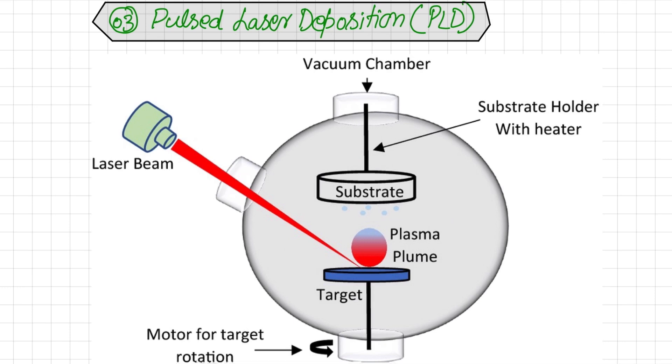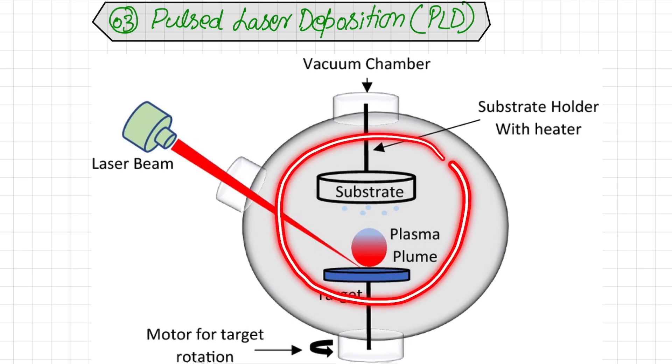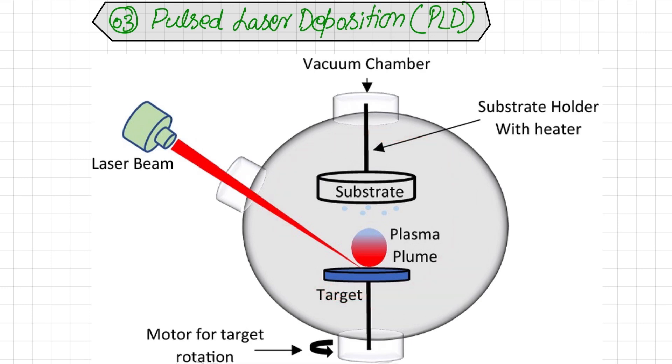So this is the basic diagram. We have mounted this target on some motor in order to get rotation of this target so that we can get uniform plume formation. This plume will contain a homogeneous quantity of atoms, and these atoms will then be deposited on the surface of a substrate. This whole assembly again is carried out in a vacuum chamber in order to create the resistance from air or from impurities.